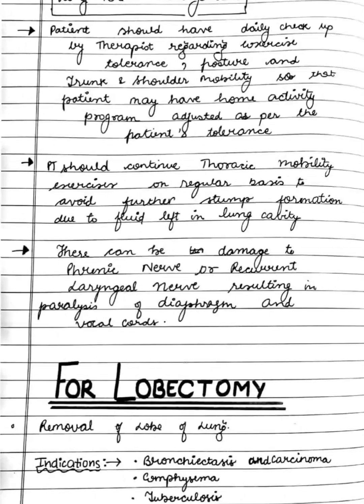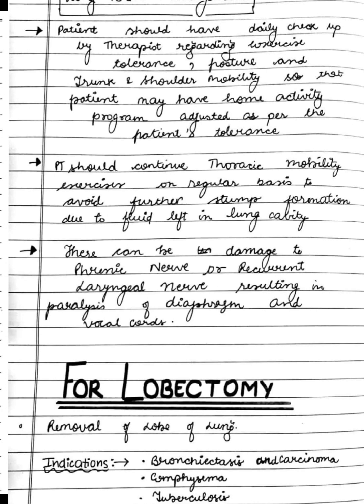In long-term management, the patient should check exercise tolerance, posture, trunk and shoulder mobility, so that the home activity program can be adjusted accordingly. The fluid in the cavity left by removal of the lung gradually fills up but must not reach the level of the stump before it has healed in 10 to 14 days. It will slowly fill the whole cavity and become organized and fibrosed from the base to the apex over a 2-year period, so the patient should continue thoracic mobility exercises regularly for at least this period.